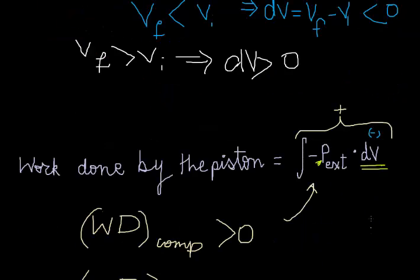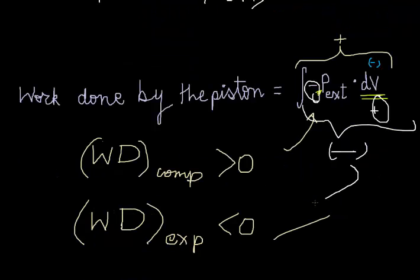So in this formula, dV would be positive and if we multiply the positive thing with a negative sign, then the whole thing in total would become negative. So the work done by a piston for expansion would be negative. That's what we wanted. So this formula is justified for both the cases for expansion as well as compression.